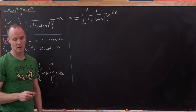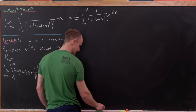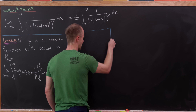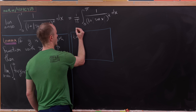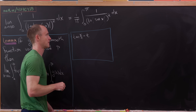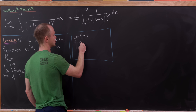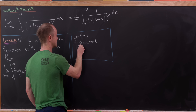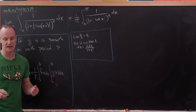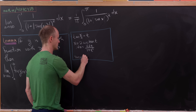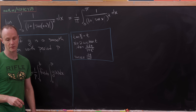Now we'll use the Weierstrass substitution, also called the half-angle tangent substitution. We set tangent of x over 2 equal to t. Then x equals 2 times arctan of t, which means dx equals 2 dt over 1 plus t squared. And sine of x becomes 2t over 1 plus t squared.